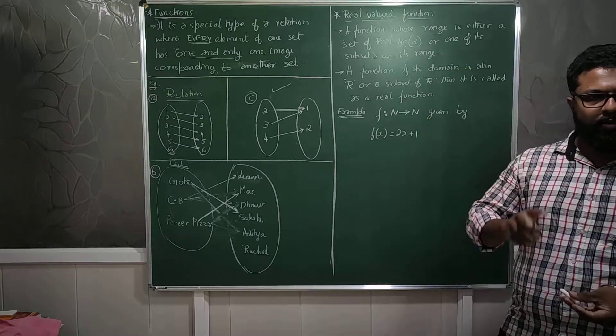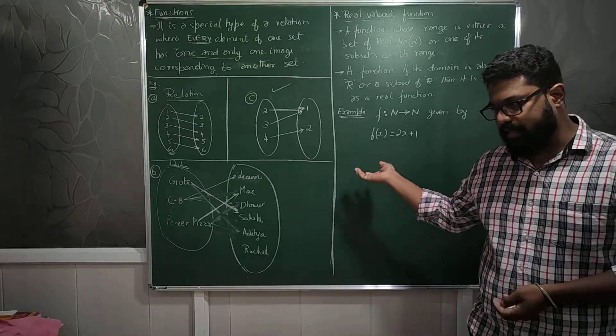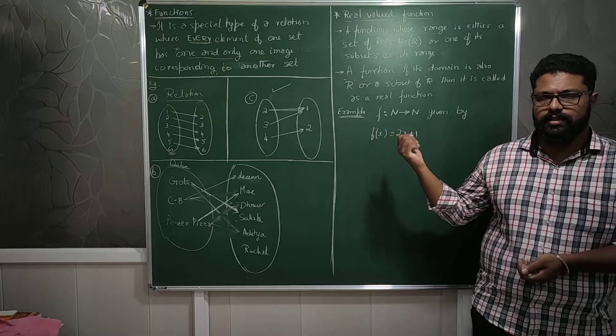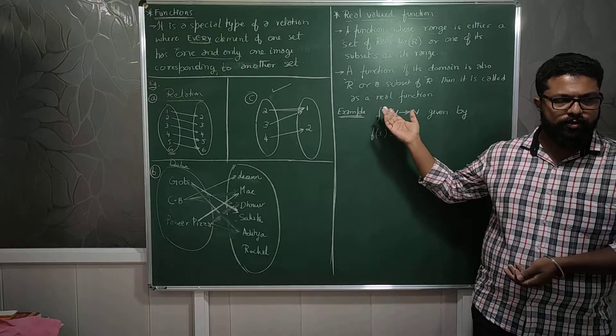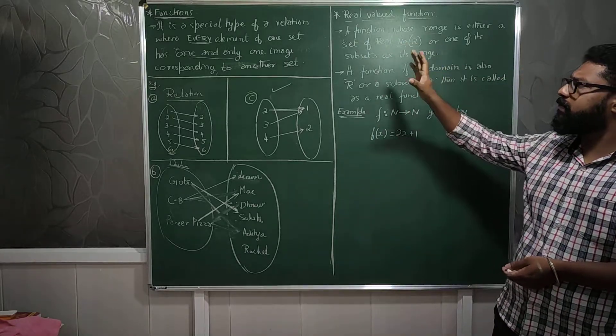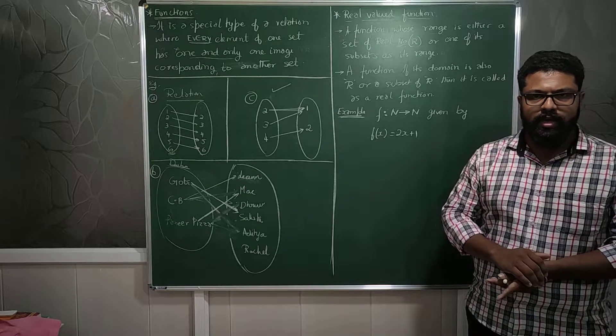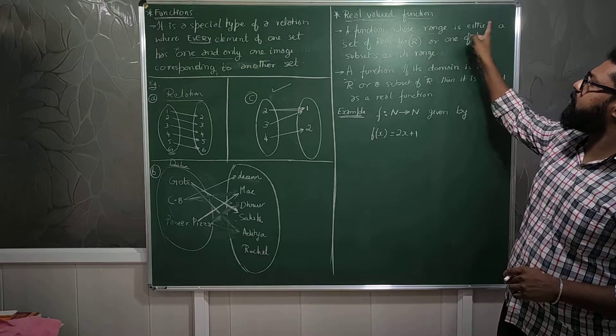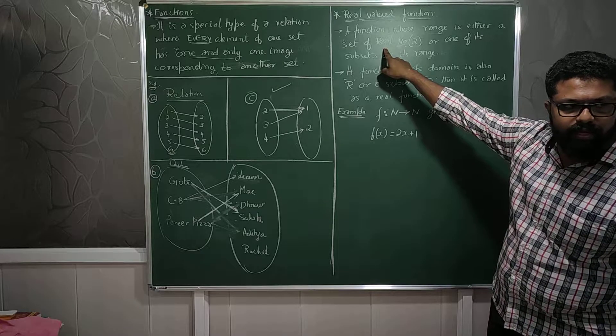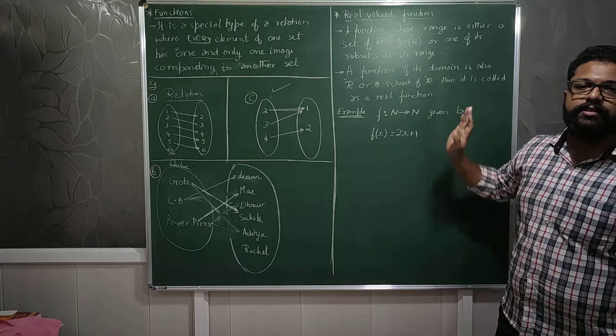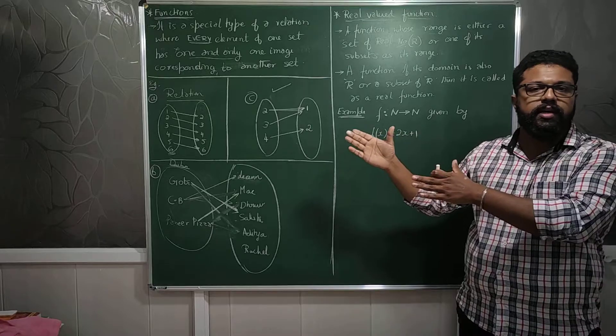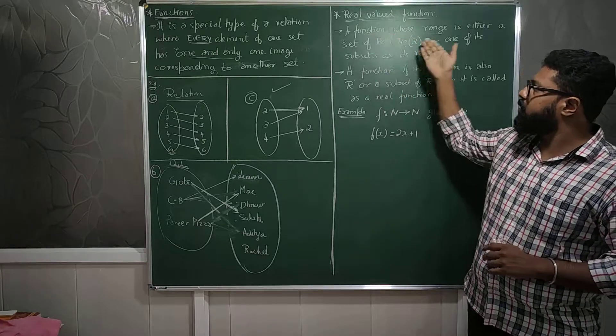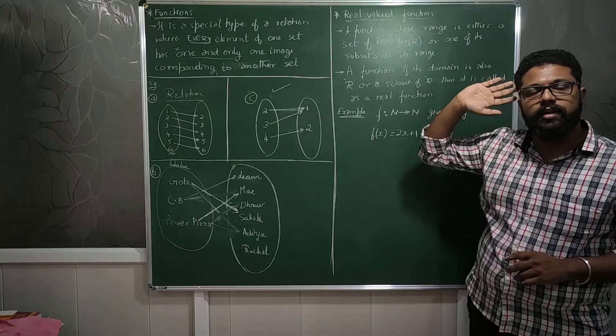Then over here, we need to know about two simple topics. What are these? Some examples can be mentioned whether it is a function or not. A function is called a real-valued function. Real-valued function, the name itself suggests it is a function whose range is either a set of real numbers, that is one definition, or its subset. A subset whose subset itself is the range of that particular set. Such a function is called a real-valued function.